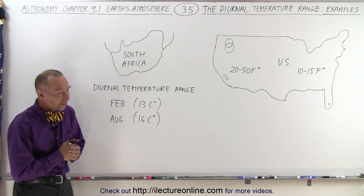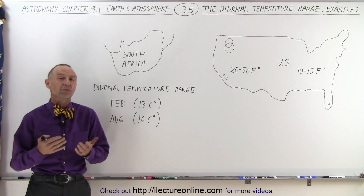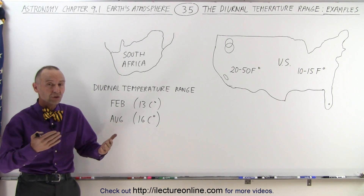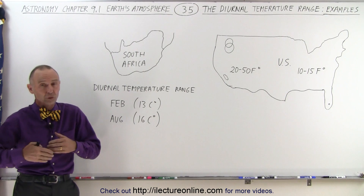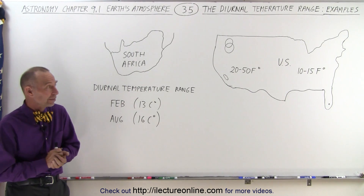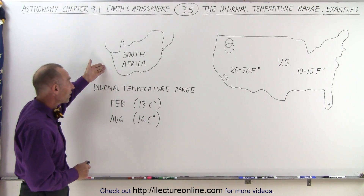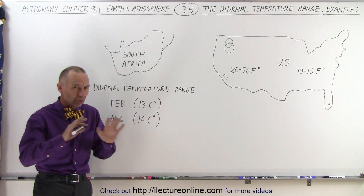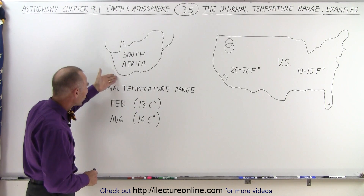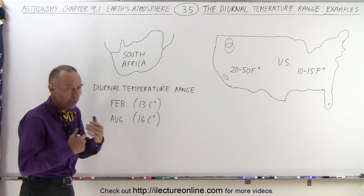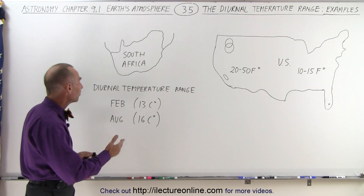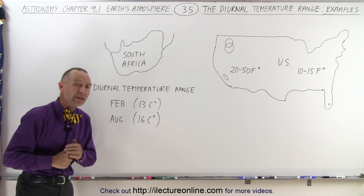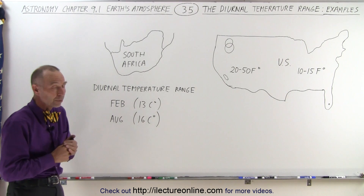Welcome to our lecture online. Let's take a look at a few places around the world and see how the diurnal temperature range changes with changing humidity regions or regions that have vastly different types of humidity. South Africa has a climate that is relatively dry in most places, unless we go right to some of the coastline areas where the humidity is a little bit higher. The diurnal temperature range in South Africa varies from about 13 centigrade degrees to about 16 centigrade degrees.